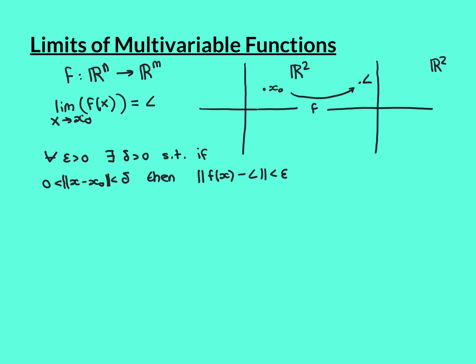If the limit as x approaches x0 of f of x equals the limit vector L, then the criterion that needs to be satisfied is: for all epsilon greater than 0, there exists a delta greater than 0, such that if you take a point x whose distance from x0 is less than delta — so the norm of x minus x0 is less than delta — in the R2 to R2 example, you can imagine drawing a little disk of radius delta around x0. All the points within that disk are the points we're interested in, and the distance being greater than 0 excludes the centre point, just like in single variable functions, because what the function maps at x0 has nothing to do with what the limit as x approaches x0 is.